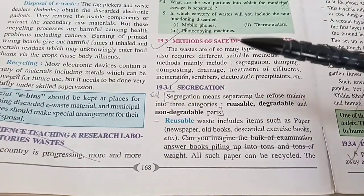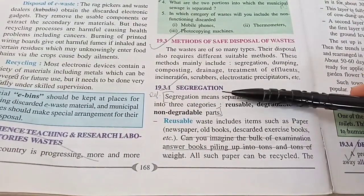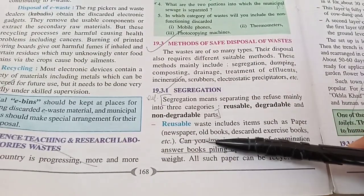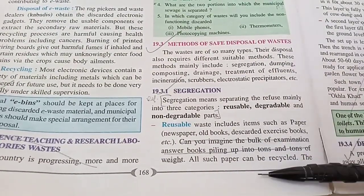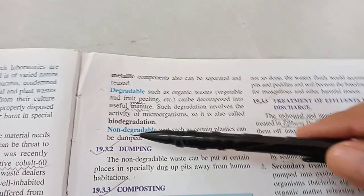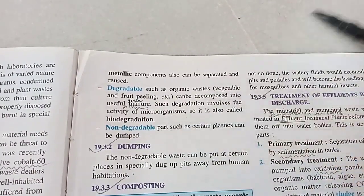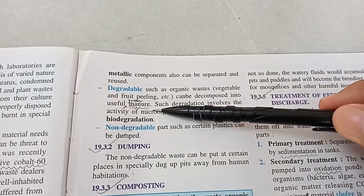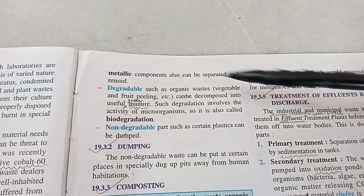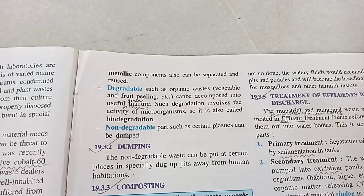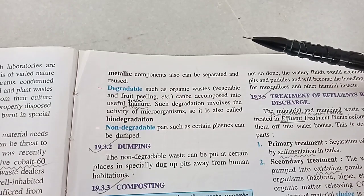The first process should be segregation. Segregate waste into three types: reusable — if paper, etc. can be reused, please reuse it; biodegradable — segregate into a separate bin, as it can be converted into green manure using plant wastes; and non-biodegradable — into another bin, which will have to be recycled or dumped into sanitary landfills.